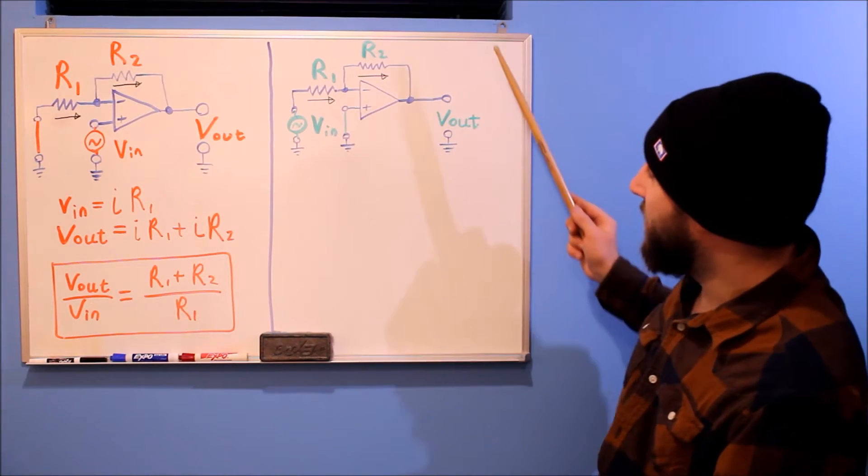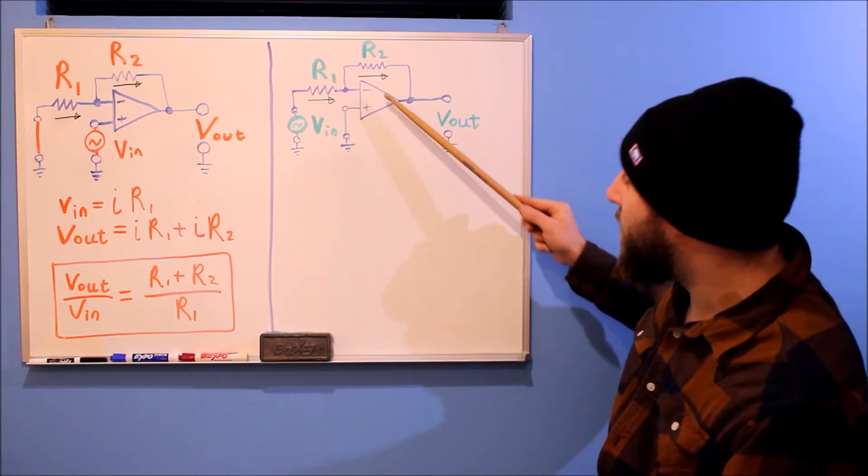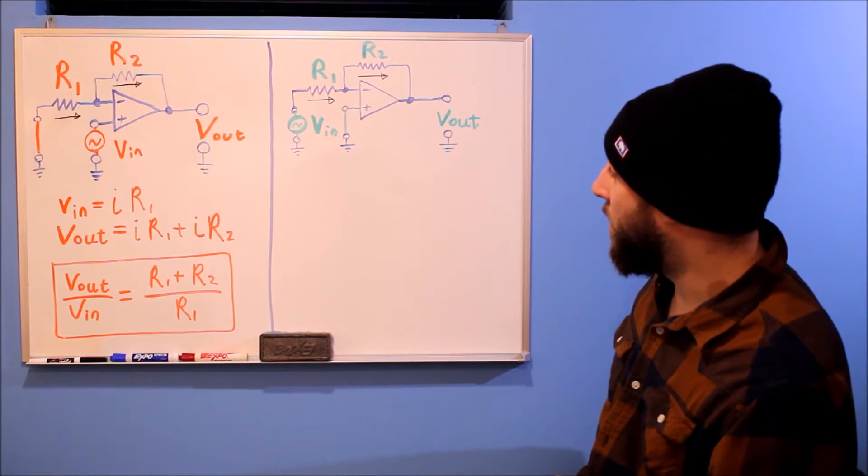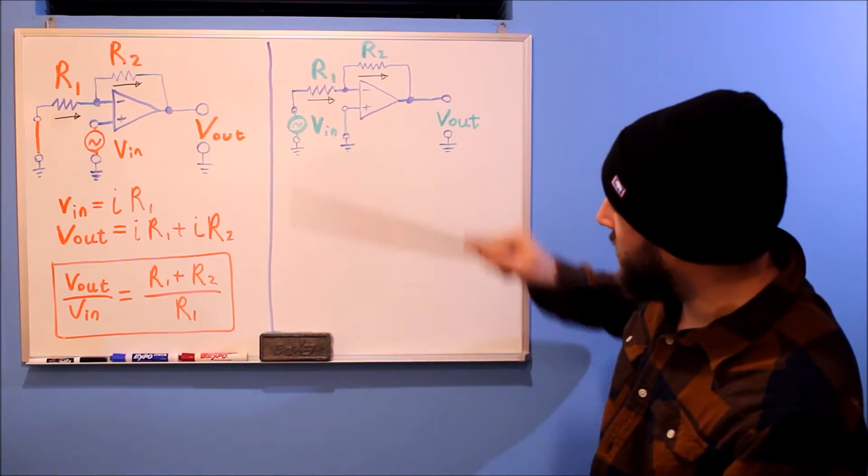And in the inverting amplifier, your non-inverting input is tied to ground, and VN is tied to R1.